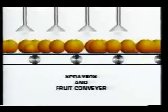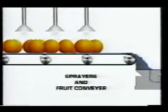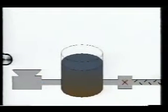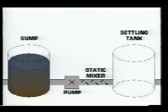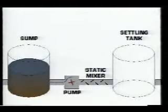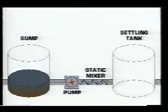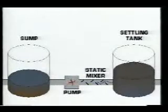The water used to spray the fruit is collected as it flows into the drain pans. This water is piped into the main sump. From here, the water is pumped into a static mixer, then into a settling tank. Any sludge floats to the top of the tank for removal.